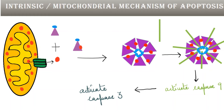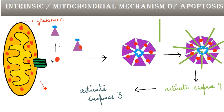The intrinsic pathway is also called the mitochondrial mechanism of apoptosis because mitochondria plays a central role. Mitochondria is a remarkable organelle containing various proteins, one of which is cytochrome c. Cytochrome c is present in the intermembrane space of the mitochondria and has a crucial role in this pathway. We can now understand the steps of the intrinsic pathway.